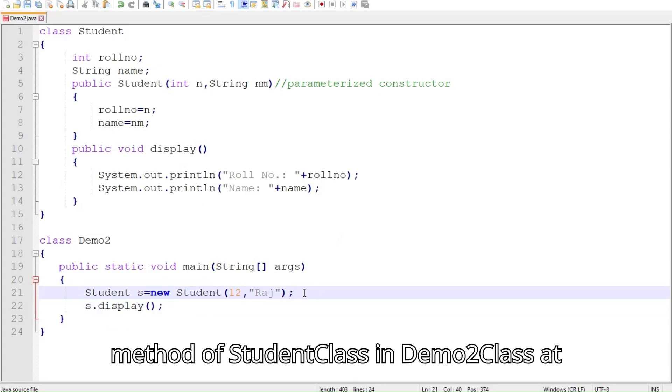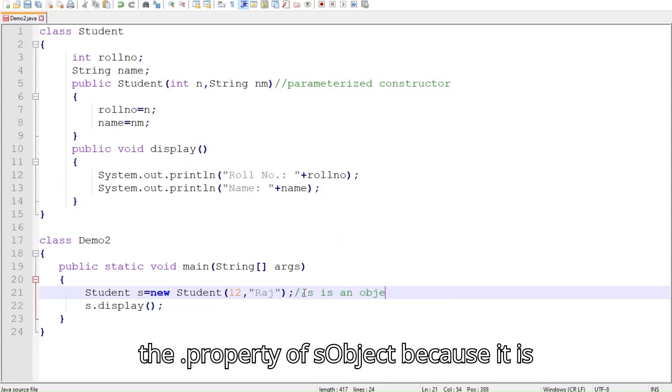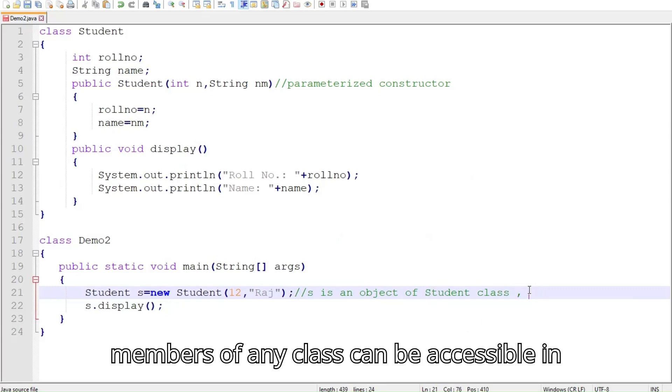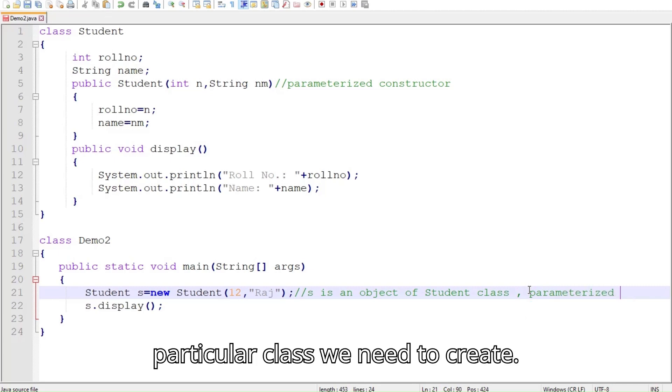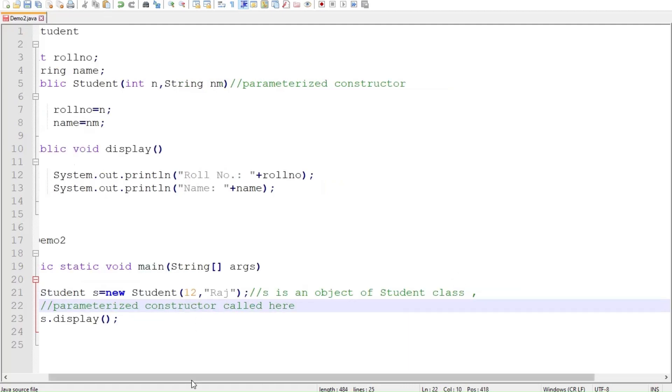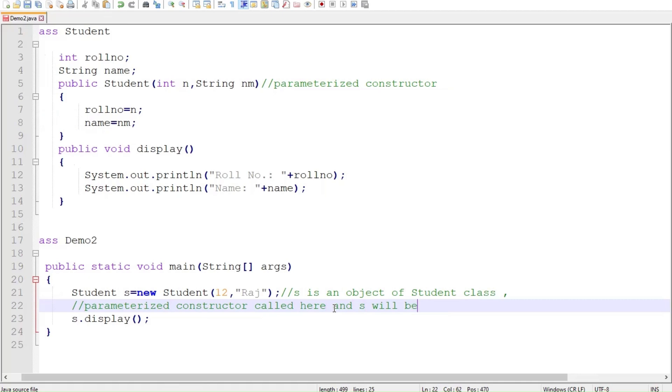Here we are creating an object of Student class s in main method of Demo2 class. This object s is initialized here by using parameterized constructor. Now we may call display method of Student class in Demo2 class at the dot property of s object because it is public in Student class. All public members of any class can be accessible in any other class. Only an object of that particular class we need to create.